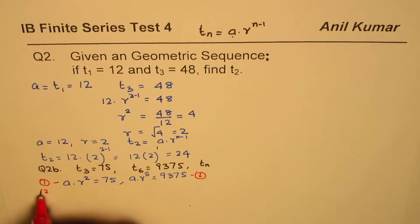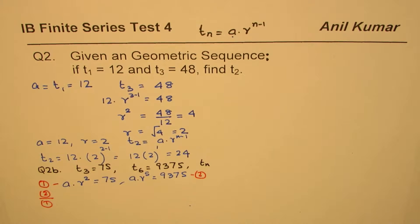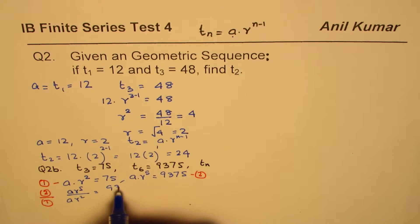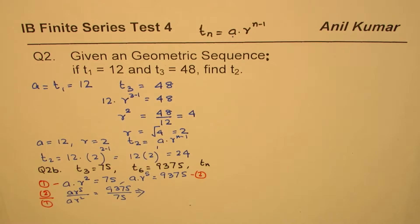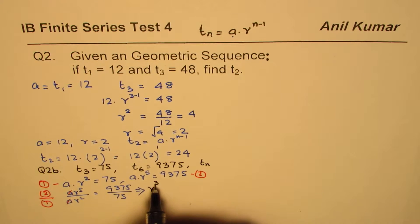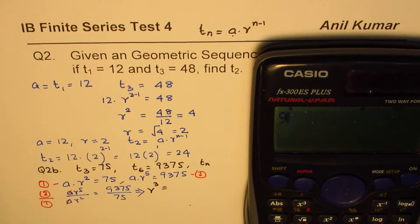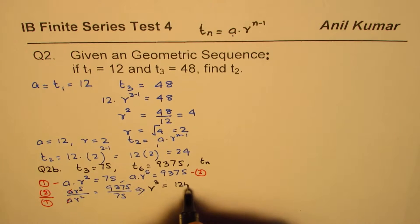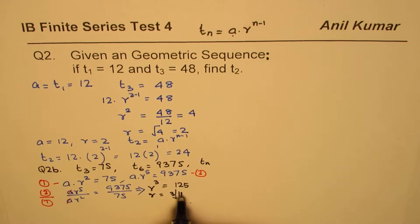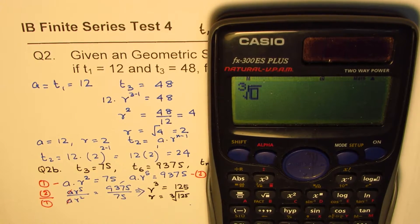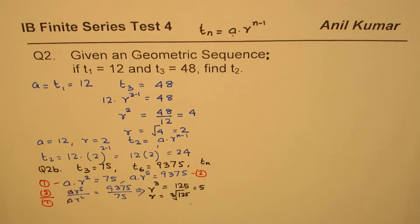Dividing equation 2 by equation 1: a·r^5 divided by a·r^2 equals 9375 divided by 75. The 'a' terms cancel, and r to the power of 5 minus 2, which is r cubed, equals 125. So r is the cube root of 125, which is 5.